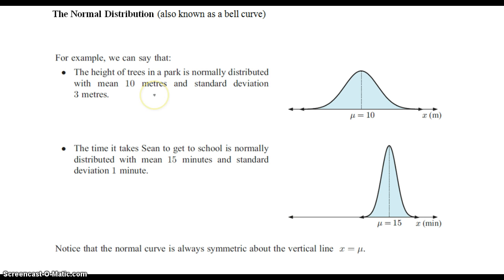So for example, the height of trees in a park is normally distributed with a mean of 10 meters and a standard deviation of 3 meters.